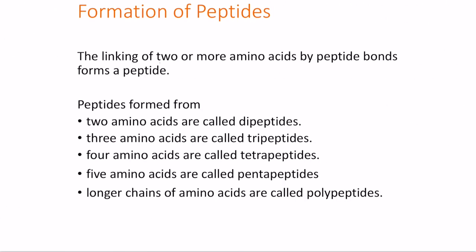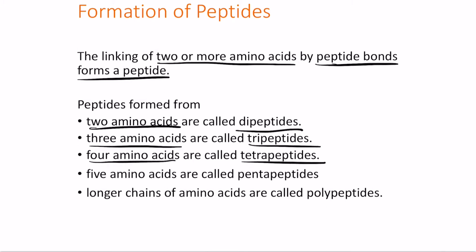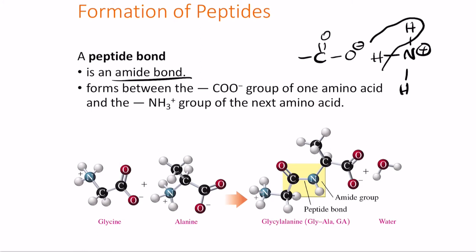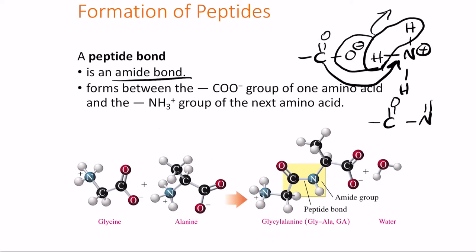When two amino acids link by a peptide bond, the result is a dipeptide. Three amino acids form a tripeptide, four form a tetrapeptide, five form a pentapeptide, and longer chains are called polypeptides. The peptide bond is specifically a C(=O)–N–H (amide) bond. To form it, two hydrogens and one oxygen are removed from the reacting groups, and the carbon bonds to the nitrogen.